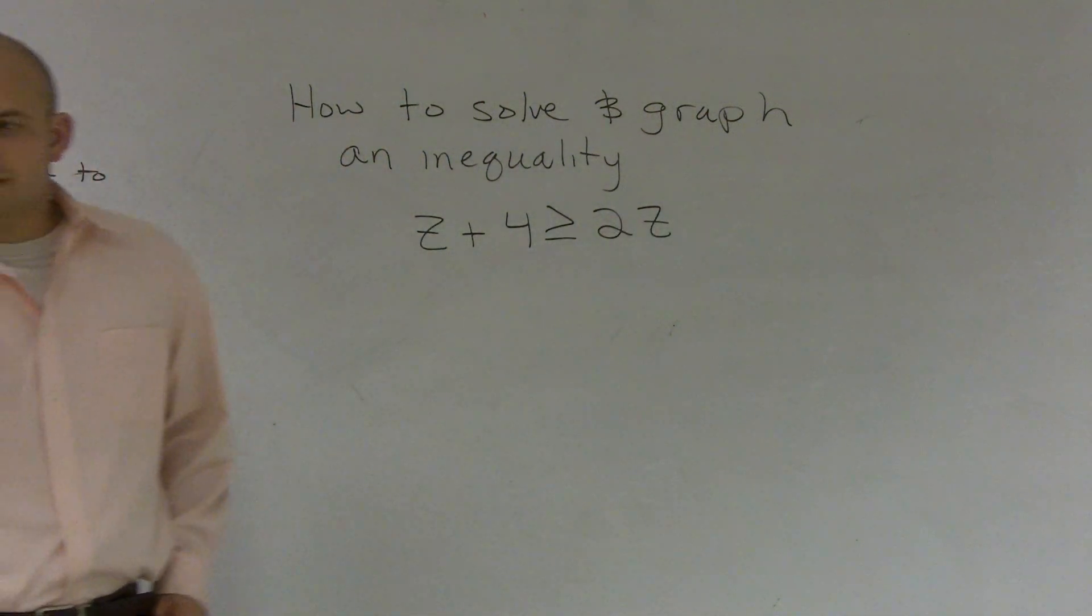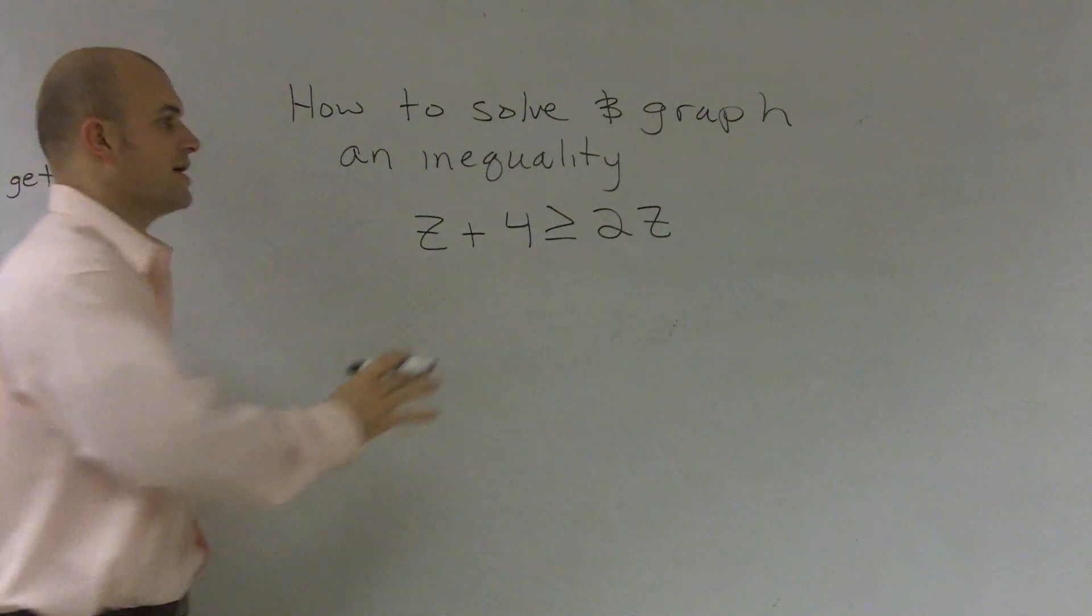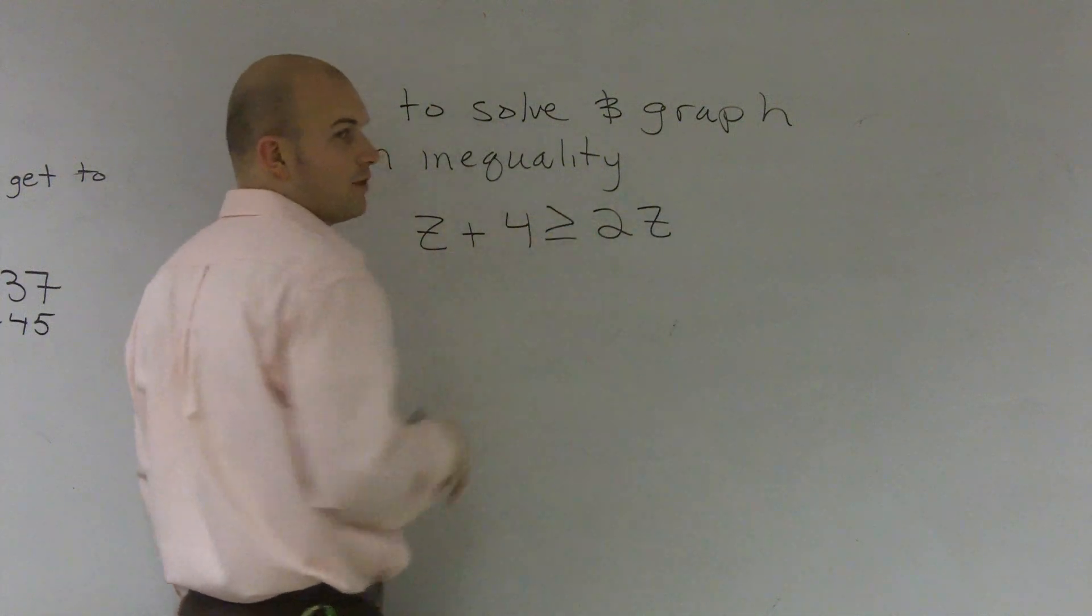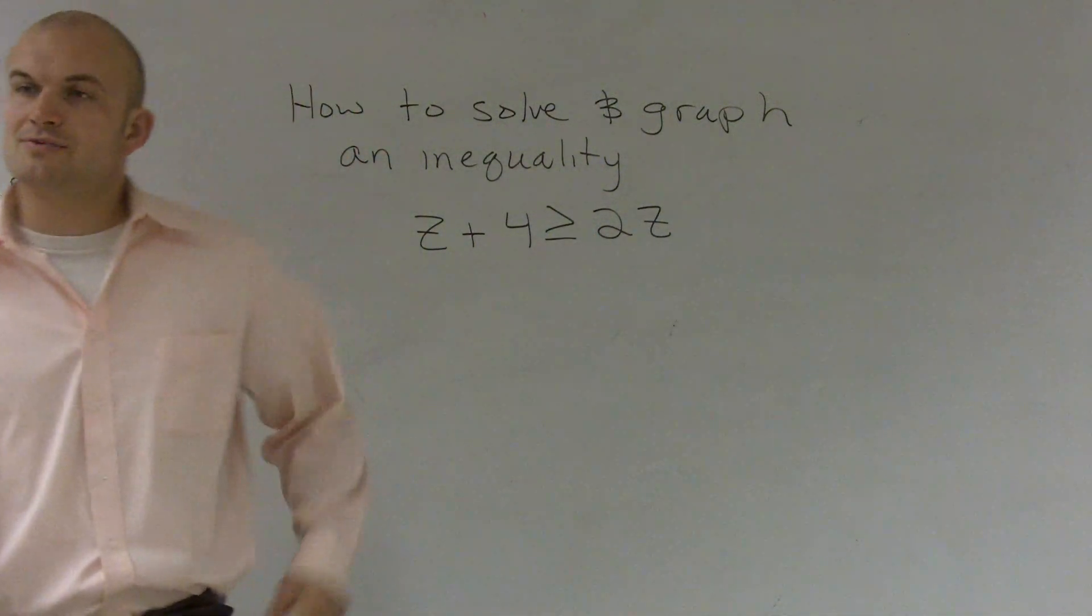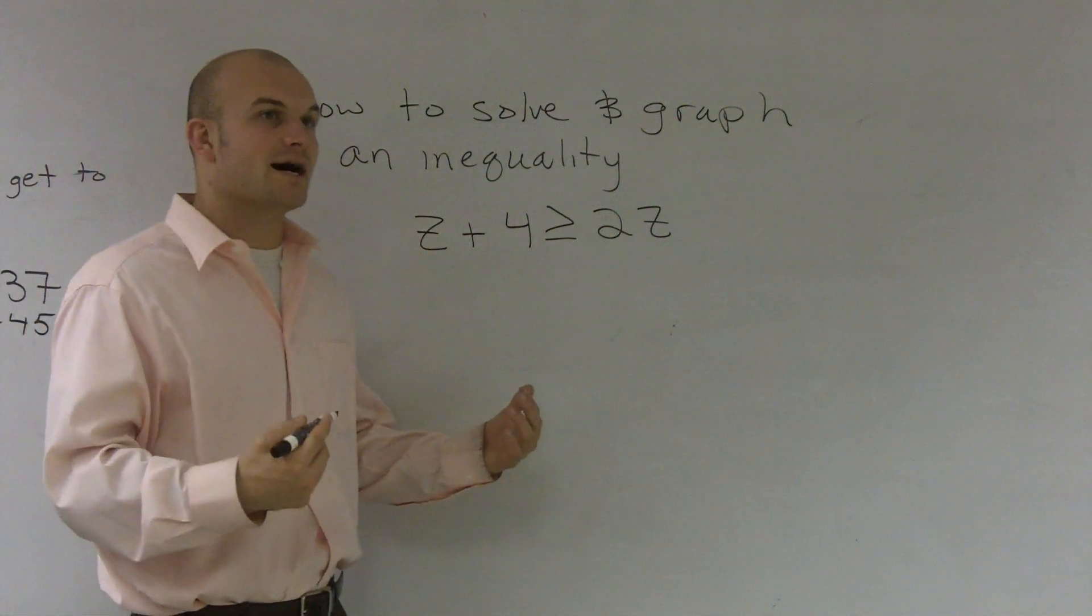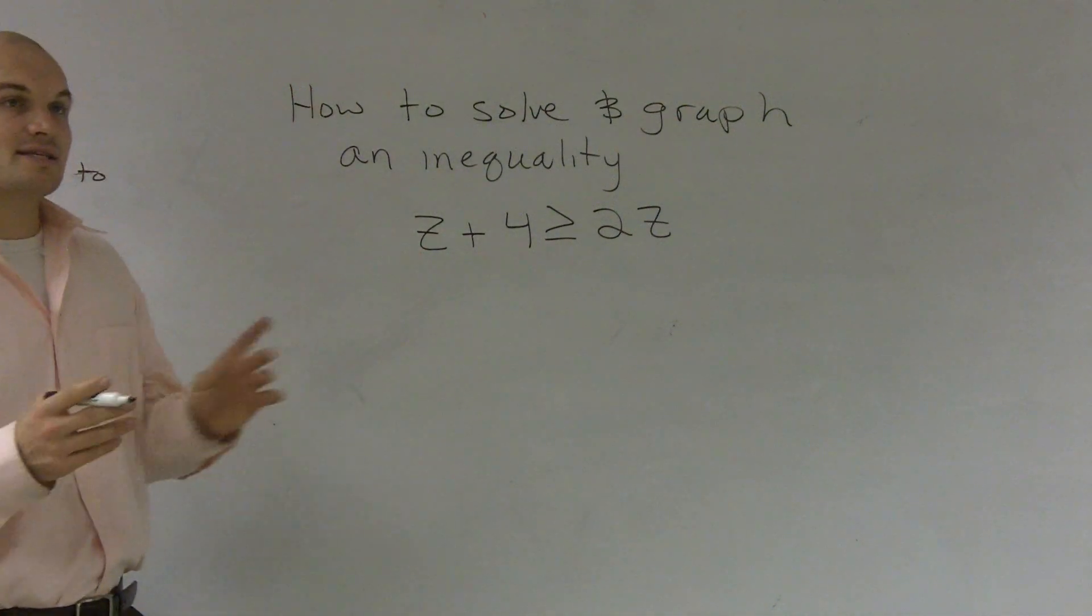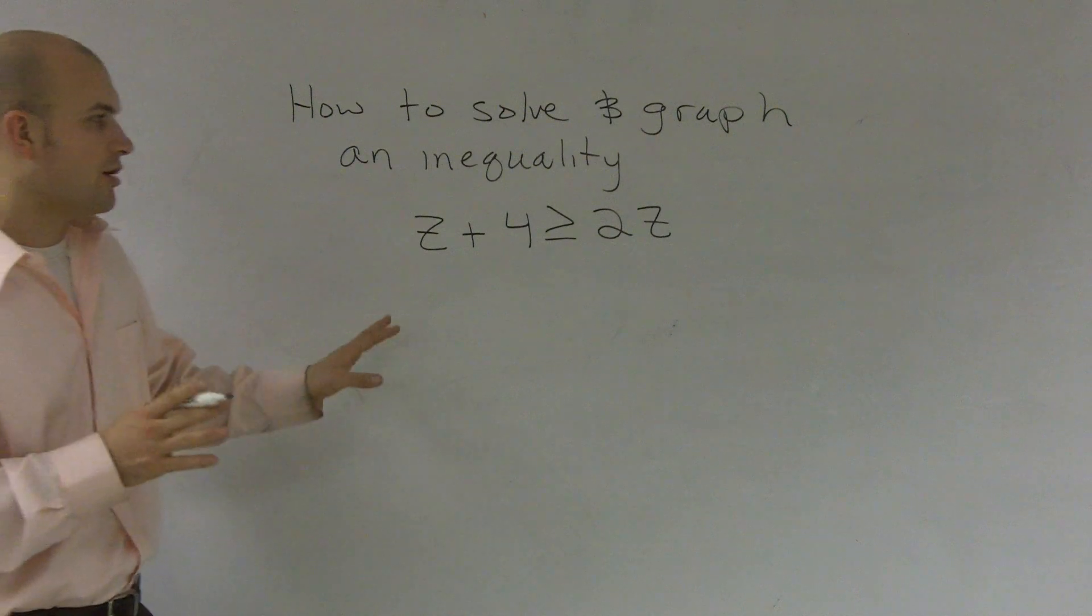What we have right here is just like when we were solving equations, we have our variable on both sides of our inequality symbol. The first thing we have to do before doing any kind of solving is make sure we get our variable on the same side because we want to isolate one variable alone so it's all by itself.